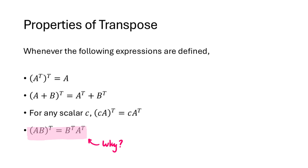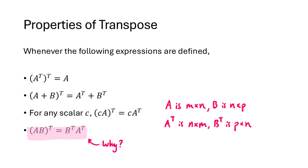For AB to be defined, A must be m by n and B must be n by p — the inside numbers match. Aᵀ is n by m and Bᵀ is p by n. Since M and P don't necessarily have to be equal, Aᵀ times Bᵀ might not even be defined in general. But BᵀAᵀ will always be defined, because the number of columns of Bᵀ is N, and that matches the number of rows of Aᵀ, which is also N.